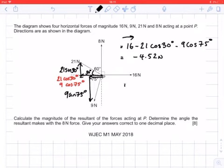Now if I look in the vertical, upwards being positive, I have 8 plus 21 sin 30 degrees take away 9 sin 75 degrees. That comes to an overall answer of 9.8 newtons.